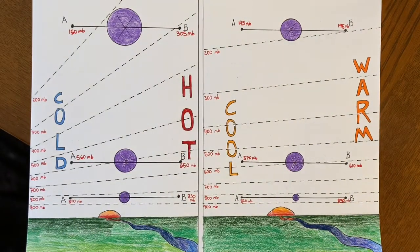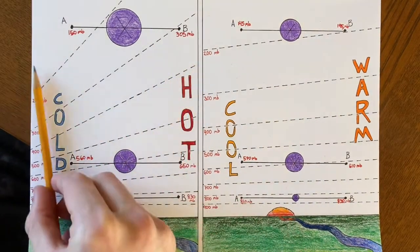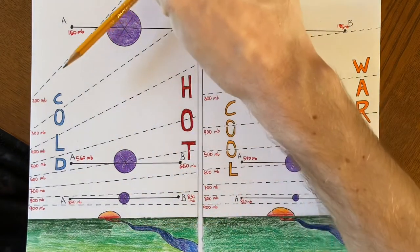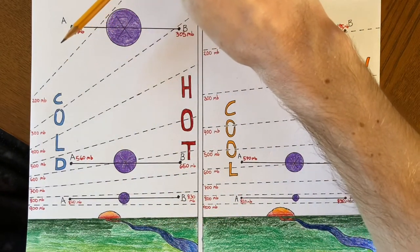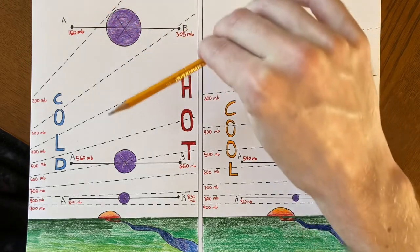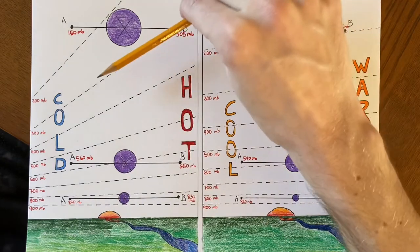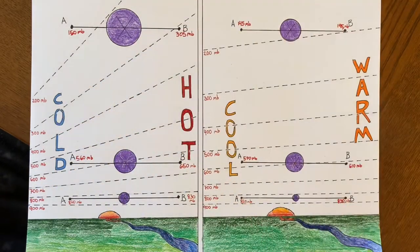So what happens if you've got two air masses next to each other with different temperatures? You got one that's hot and one that's cold. Well, in the hot air mass, the pressure levels are expanded. The hot air is less dense. The whole atmosphere kind of rises out and expands. And in the cold one, they're closer together. So there's this sloping of the pressure lines that happens.